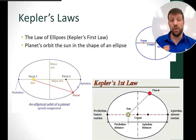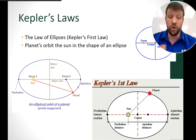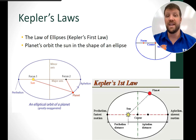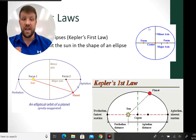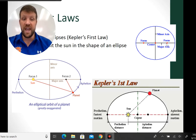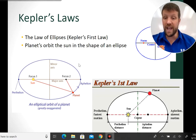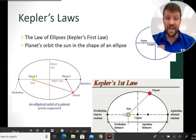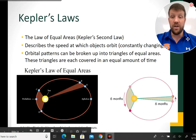Kepler's laws help define these orbits. The first is the law of ellipses — we don't travel in perfect circular orbits; we travel in ellipses, which are circle-like shapes with two foci. A planet moving in this orbit will be closer to and farther from the Sun at different times. The second is the law of equal areas, which describes how orbital speed constantly changes.